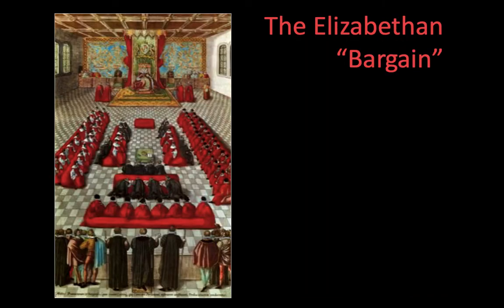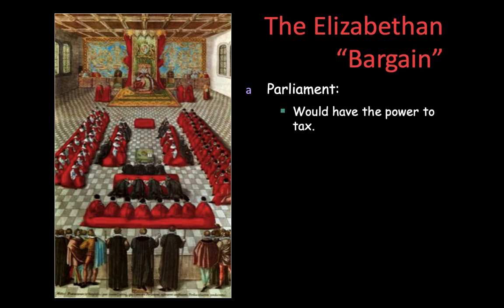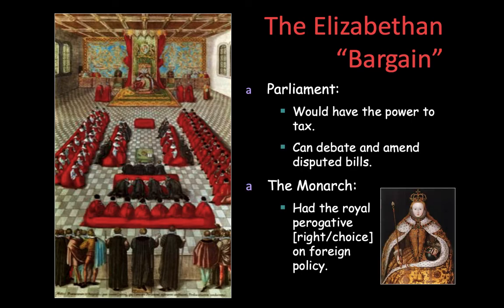Moving up to the late 1500s, we come to Henry VIII's one daughter, Elizabeth. She is the monarch from 1558 to 1603. Parliament has the power to tax and amend bills, but she had the prerogative and her choices on foreign policy. What Henry and Elizabeth did, if they didn't want to ask Parliament for money, was simply use their own personal money — which is something Elizabeth did.